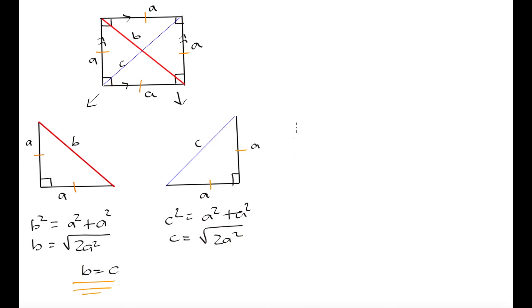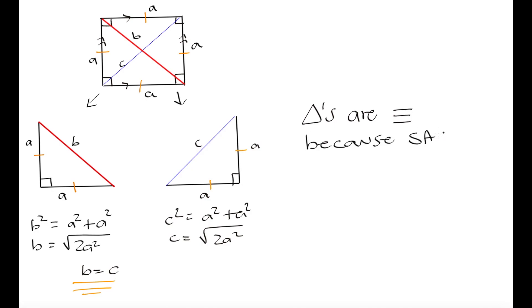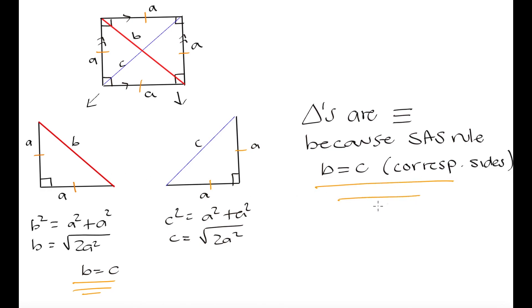Since the triangles are congruent, all corresponding sides and angles will be congruent. Since b and c are corresponding sides of our congruent triangles, b must equal c because of triangle congruency — proven by the side-angle-side rule. We have proven that the diagonals are equal in length, and since the diagonals bisect each other, each of these segments is also equal in length. That summarizes everything we need to know about the square.